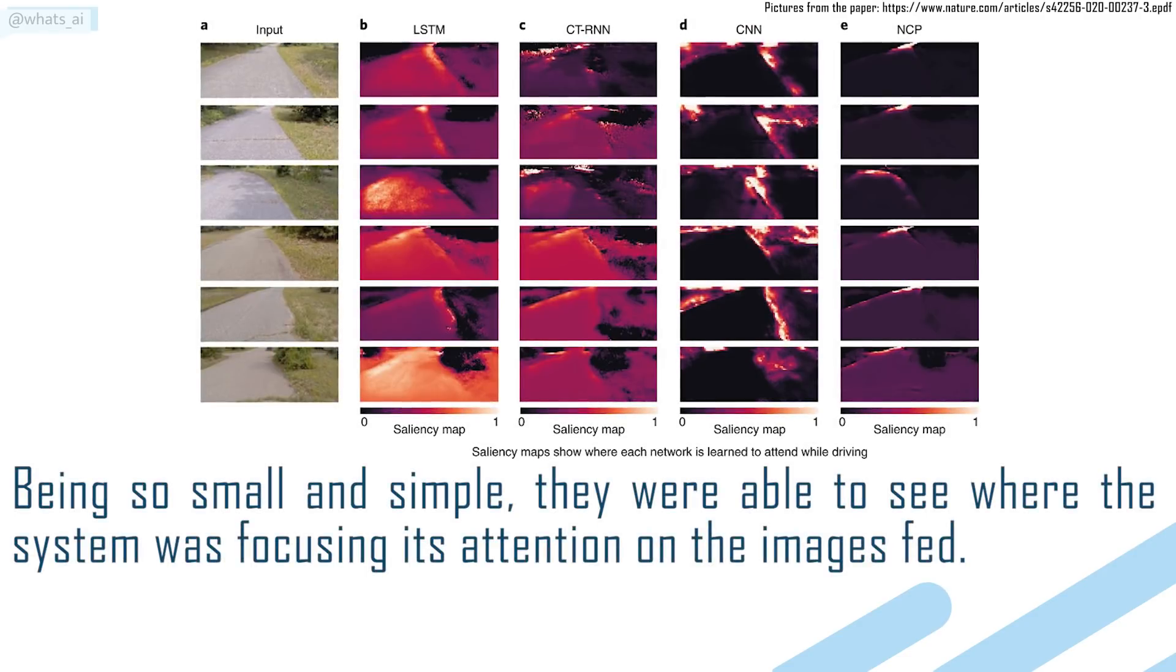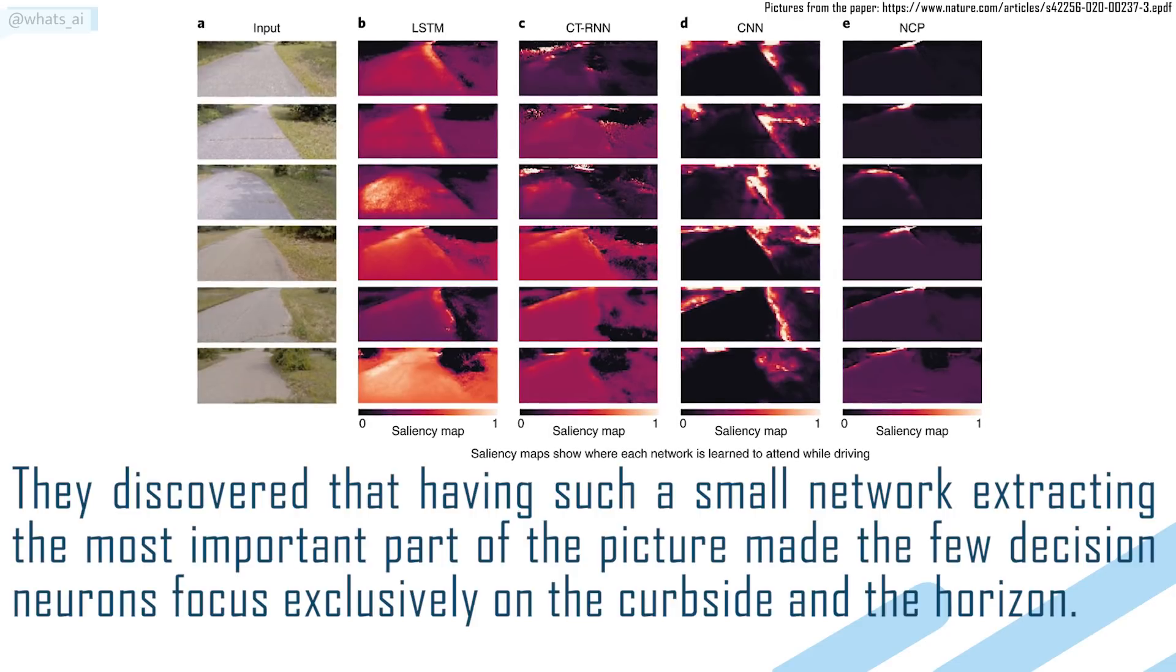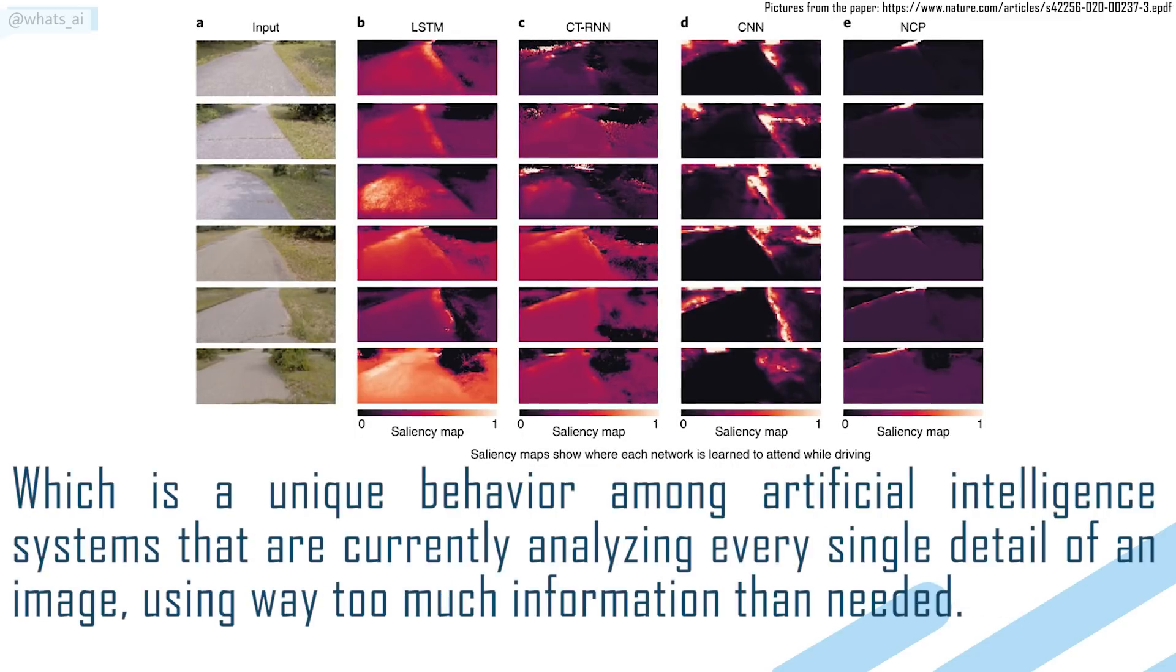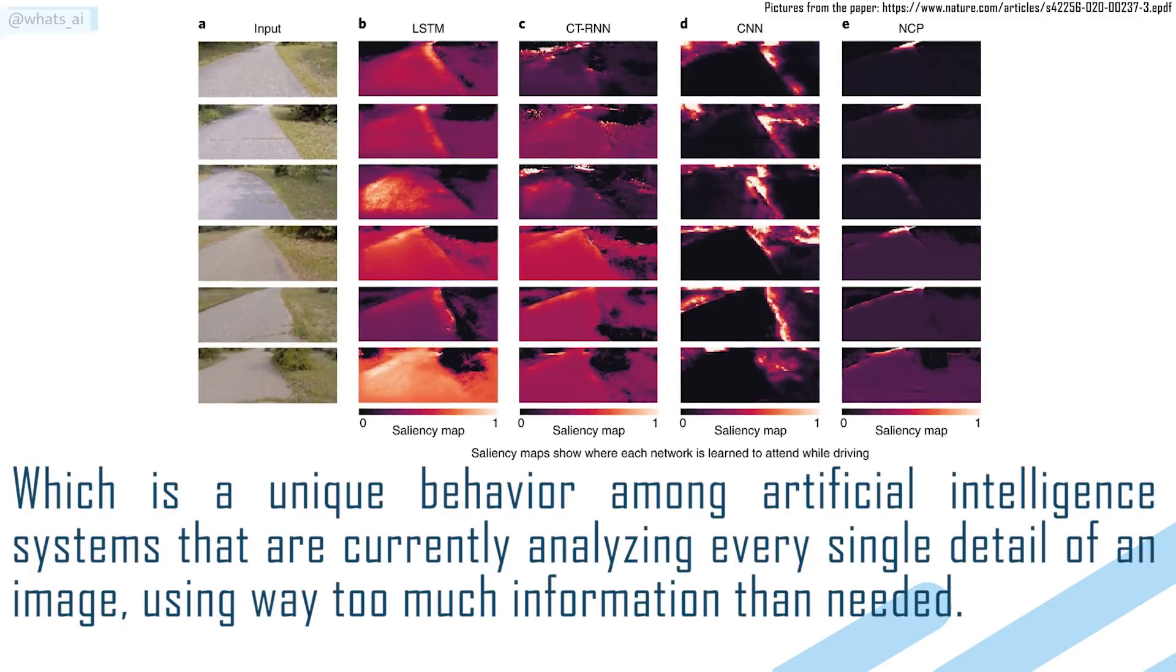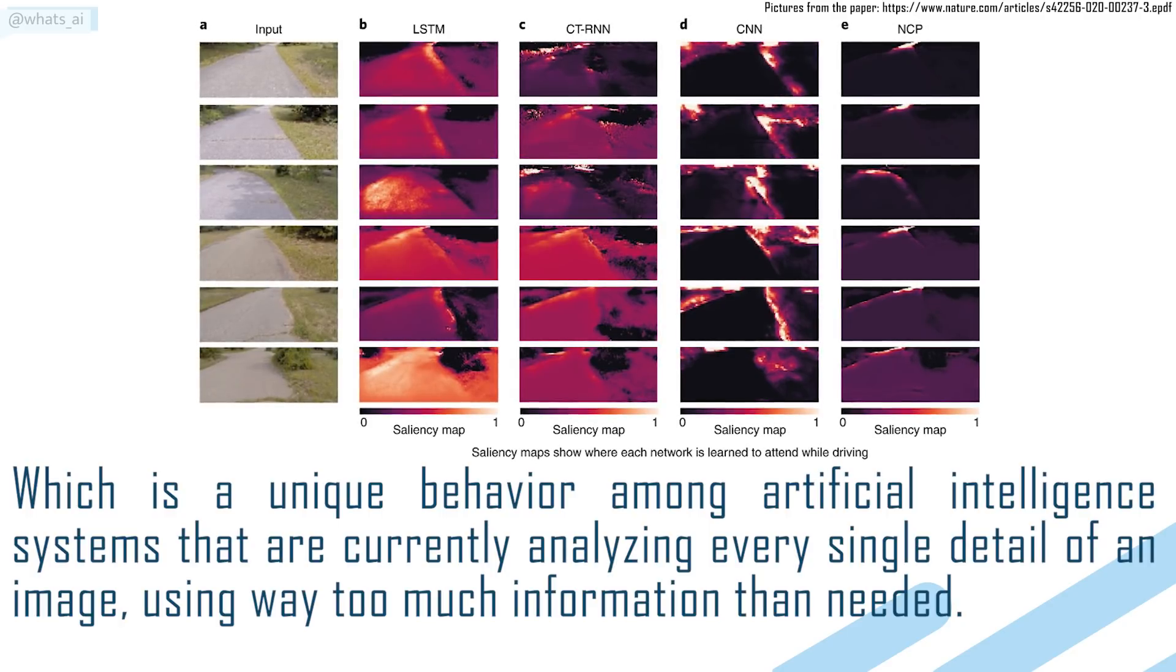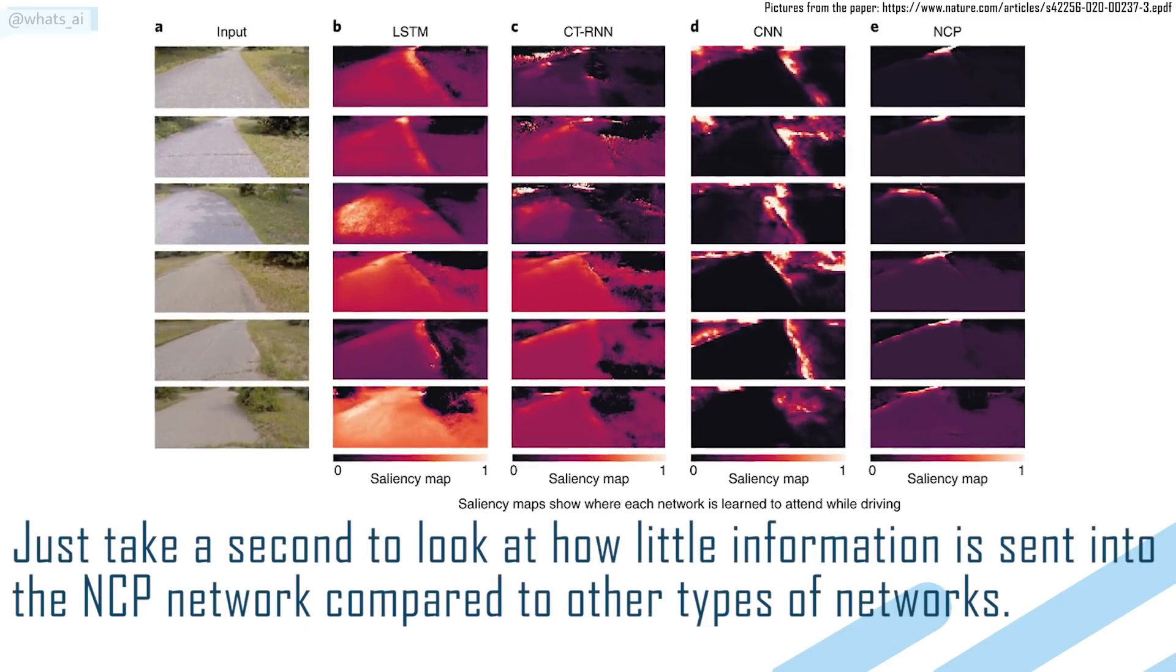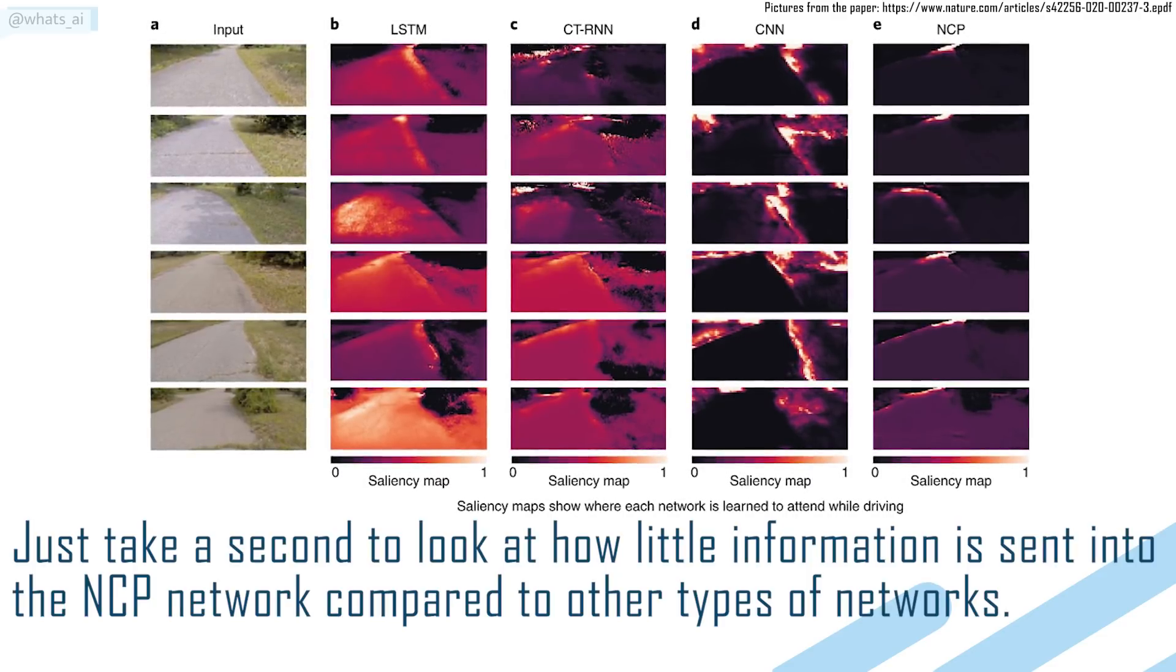Being so small and simple, they were able to see where the system was focusing its attention on the images fed. They discovered that having such a small network extracting the most important part of the picture made the few decision neurons focus exclusively on the kerbside and the horizon, which is a unique behavior among artificial intelligence systems that are currently analyzing every single detail of an image, using way too much information than needed. Just take a second to look at how little information is sent into the NCP network compared to other types of networks.